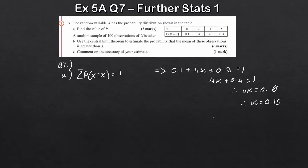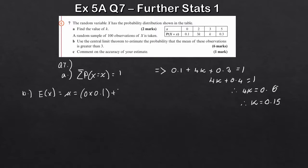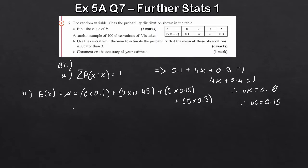In part (b), we're told we have a random sample of 100 observations, and we need to use the Central Limit Theorem to estimate the probability that the mean of these observations is greater than 3. First, we work out the mean, E(X), by multiplying each x value by its probability: 0 times 0.1, plus 2 times 0.45, plus 3 times 0.15, plus 5 times 0.3.